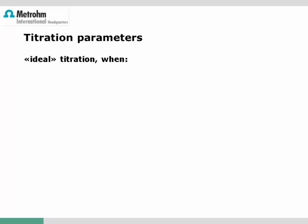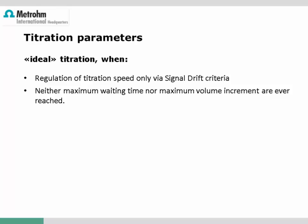How do you know you have chosen the best parameters for your application? You can check by looking into the measuring point list and comparing a few key parameters defined in the titration method. The titration should only be controlled through the signal drift criteria. Whenever the maximum limit value for waiting time or volume increment is reached, the signal drift criteria has been overruled and the electrode response may not correspond to the chemical reaction in the titration vessel. If the limit values are never reached, the titration parameters are well chosen — we call this a fully drift-controlled titration.